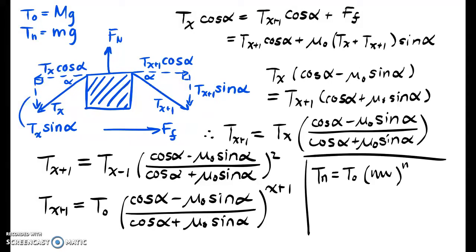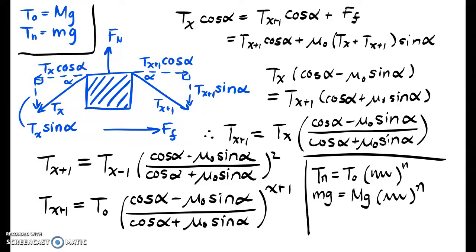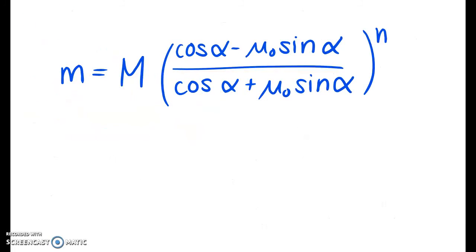Now we can plug in what we know: tn equals mg and t0 equals Mg. So mg equals Mg times the coefficient to the nth power. Since g appears on both sides, it cancels out, giving the relationship between small m and large M. Therefore, the minimum mass m required to keep the system at rest is m equals M times (cosine alpha minus mu0 sine alpha) over (cosine alpha plus mu0 sine alpha), raised to the nth power, where alpha equals pi over 2n.